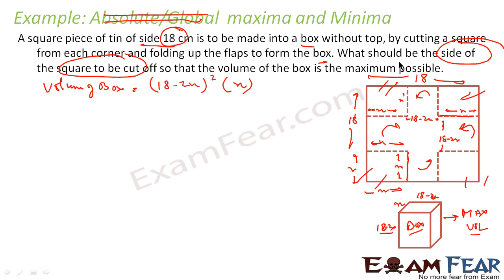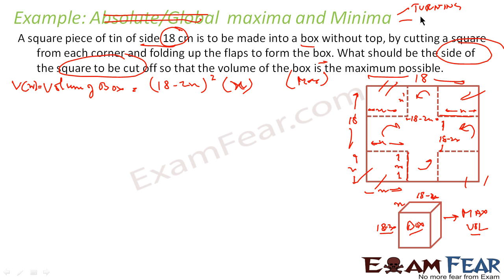Why did I find the volume? Because we are talking about the maximum volume. So the first thing I did was find the volume expression. The question now is simple: we have to find the value of x for which this function V(x) is maximum. This function can have maximum values at turning points, non-differentiable points, and end points. Since there is an open interval, there are no end points; since it is a continuous function, no non-differentiable points. The only point is the turning point, so V'(x) must equal 0.